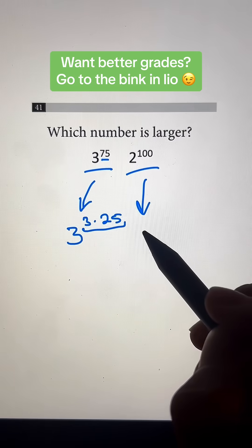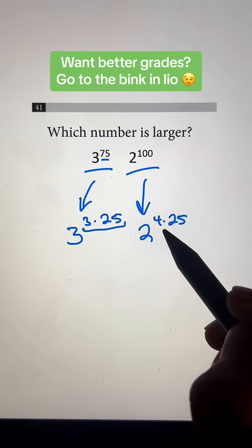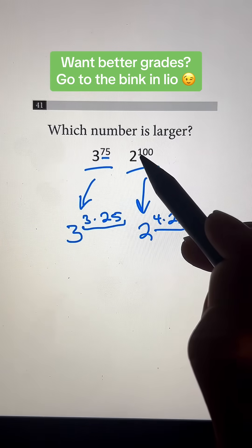And 2 to the 100th power, we can write that as 2 to the 4 times 25th power because 4 times 25 is just going to be the same thing as 100.